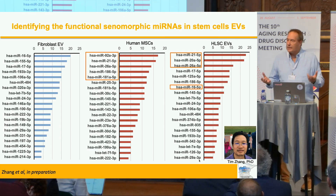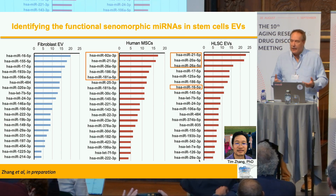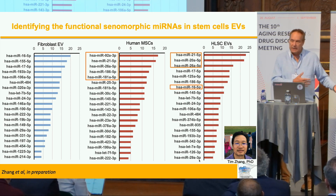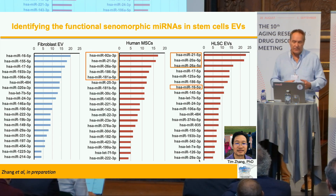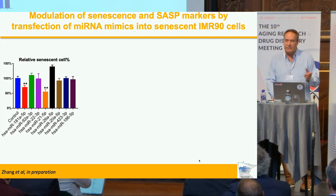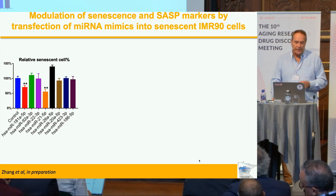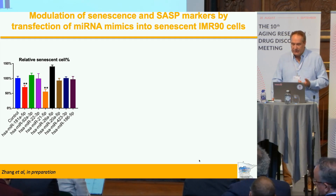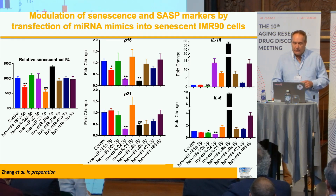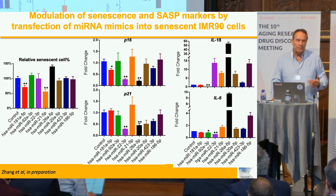We were interested to know what components of these EVs were important for conferring this effect. We hypothesized that it was actually the microRNA composition. So we looked at the microRNA profile of non-stem cell fibroblast EVs compared to human MSCs and human liver stem cells, and took the microRNAs most prevalent in the stem cells but not in the fibroblasts. If you took these individual microRNAs and transfected them into senescent IMR-90s, a few suppressed SA-beta-gal. There were also microRNAs that suppressed p16 and p21, but they were not the same ones that suppressed SA-beta-gal. And they were not the same ones that suppressed IL-1 beta and IL-6 — in fact, most of the microRNAs stimulated IL-1 beta; it was only one or two that suppressed IL-1 beta and IL-6.